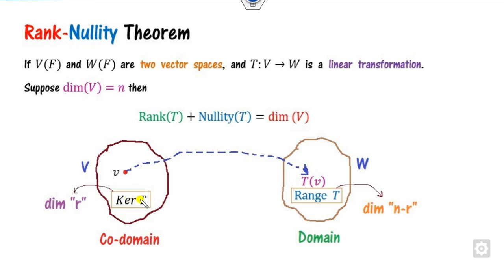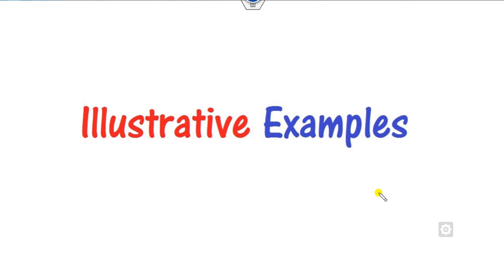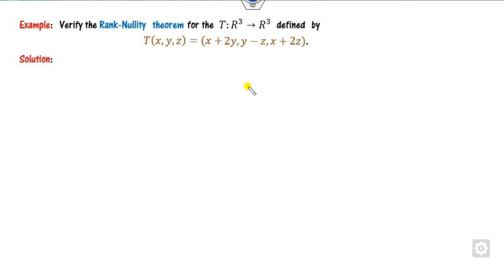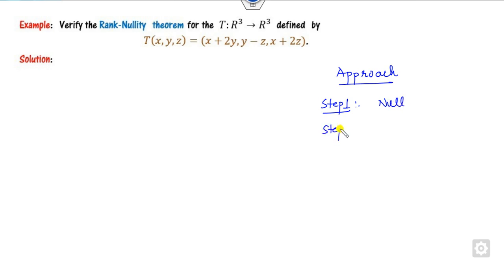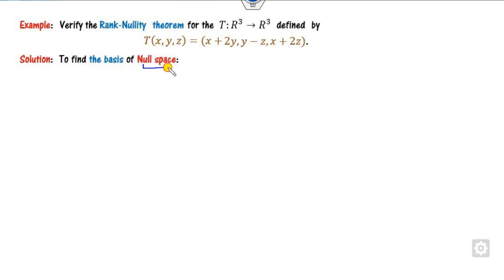For example, if the dimension of the kernel is R and the total dimension is N, then the rank is N minus R. We will see how to solve this with 4 to 5 examples in a simple manner. The approach for all questions will be the same: Step 1 — define the null space; Step 2 — define the range, then calculate the nullity and the rank.